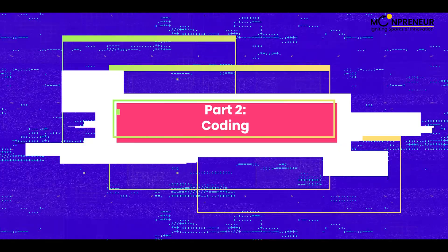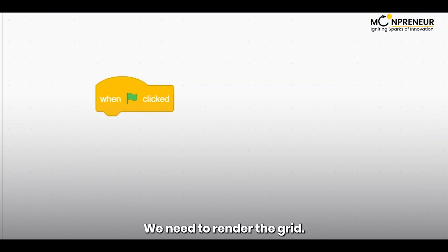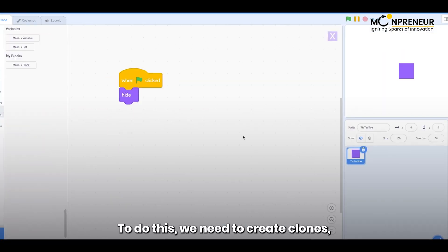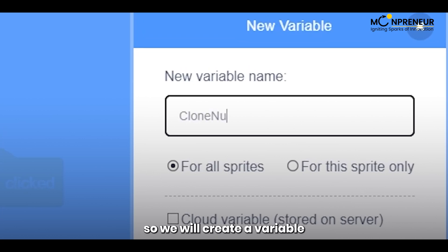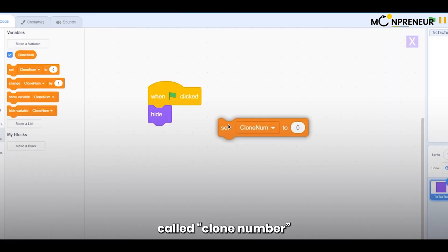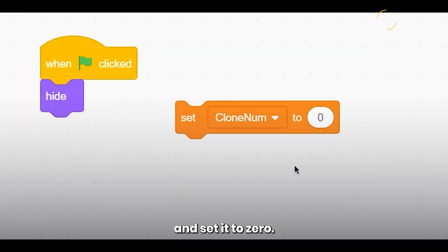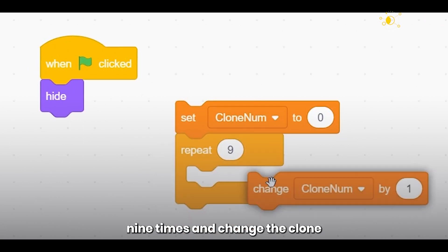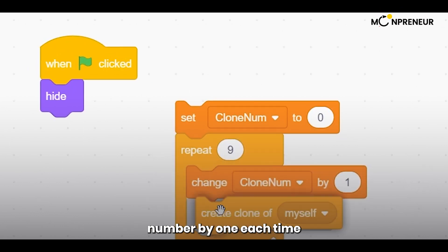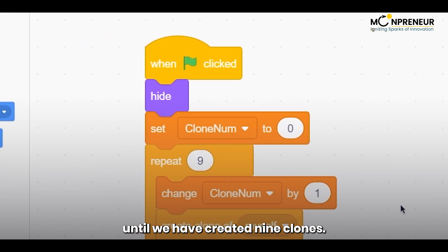Part 2. Coding. We need to render the grid. To do this, we need to create clones, so we will create a variable called cloneNumber and set it to zero. Then we will repeat this process nine times and change the clone number by one each time until we have created nine clones.